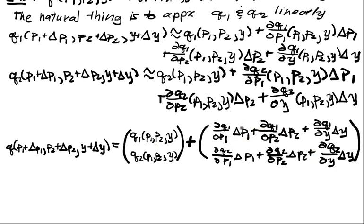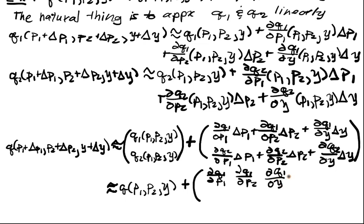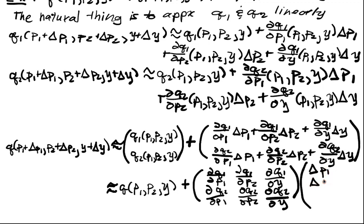If I look at this vector closely, it's just exactly going to be, I'm going to write this as Q of P1, P2, Y plus, and this is approximation, it's the case that this is DQ1/DP1, DQ1/DP2, DQ1/DY, DQ2/DP1, DQ2/DP2, DQ2/DY multiplied by the change vector. So I have delta P1, delta P2, and delta Y. That's my change vector.